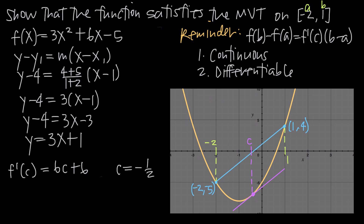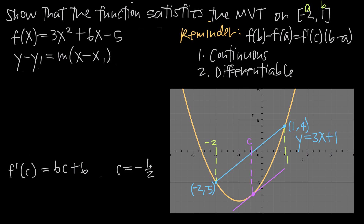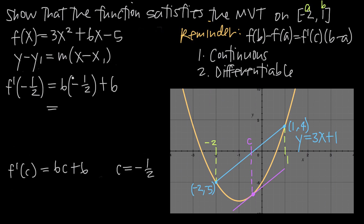To find the slope of the tangent line, we plug c = -1/2 into the derivative, since the derivative models the slope of the tangent line. So f'(-1/2) = 6(-1/2) + 6 = -3 + 6 = 3. The slopes are both 3, so we already know the lines are parallel.